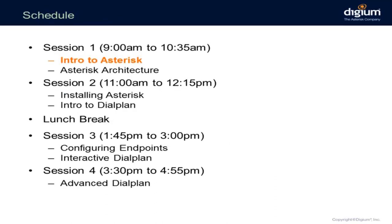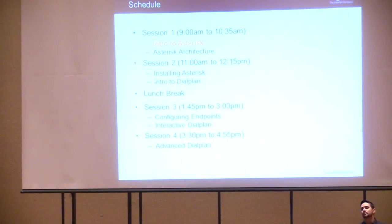Today we're going to talk about basic Asterisk dial plan, what Asterisk is, what the architecture of Asterisk is, and we're going to get into interactive dial plan and some advanced dial plan features. We're going to have four sessions: introduction to Asterisk, Asterisk architecture, installing Asterisk from source code or repos, configuring endpoints using PJSIP — not chan_sip — and IVRs with advanced dial plan including variables and conditional branching.